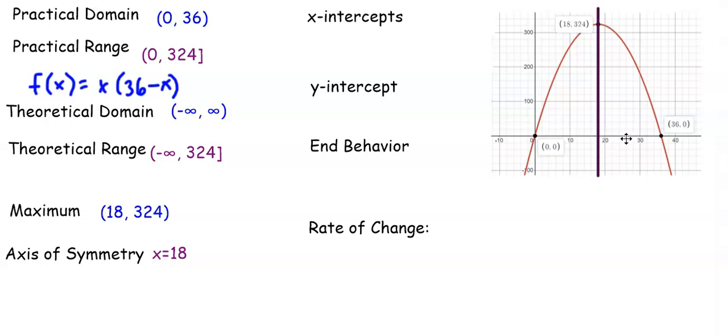If you continue to increase the length, then your area will actually decrease from 324 feet. The x-intercepts are 0, 0 and 36, 0. So these are the lengths when the area is 0.